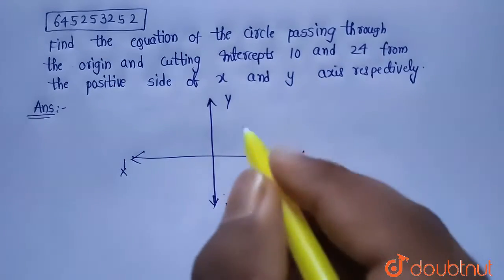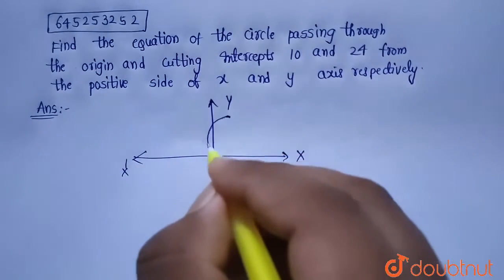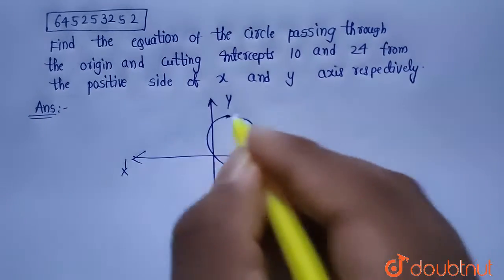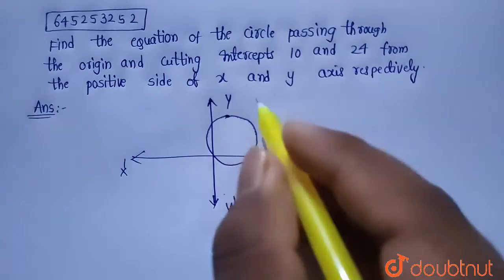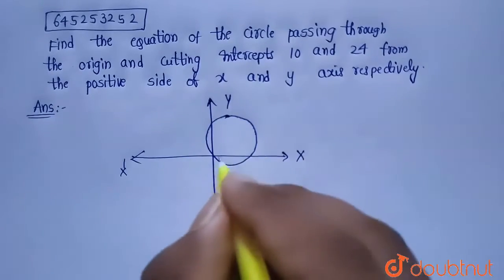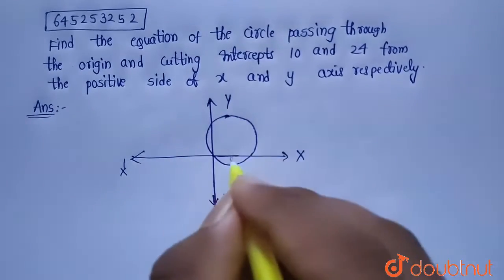Given the circle is passing through the origin, so the circle should pass through origin like this. Given the intercept made by the circle on the x axis is 10 and that is on the positive side of x axis.